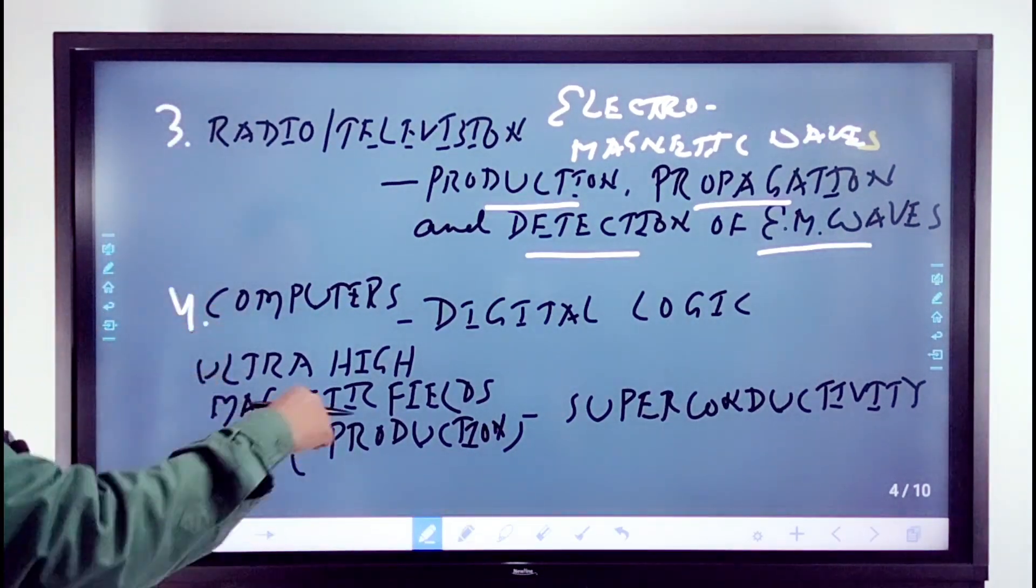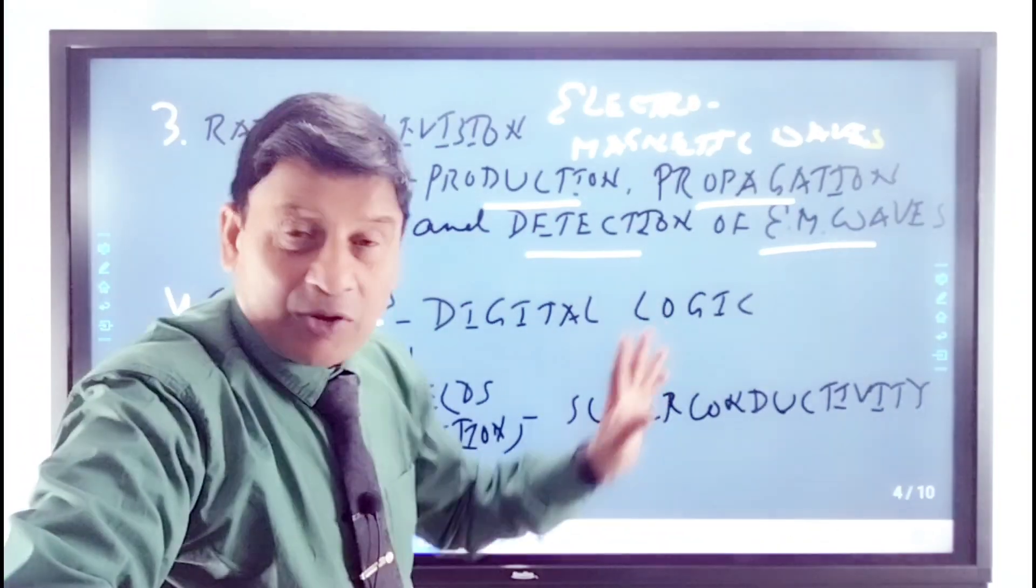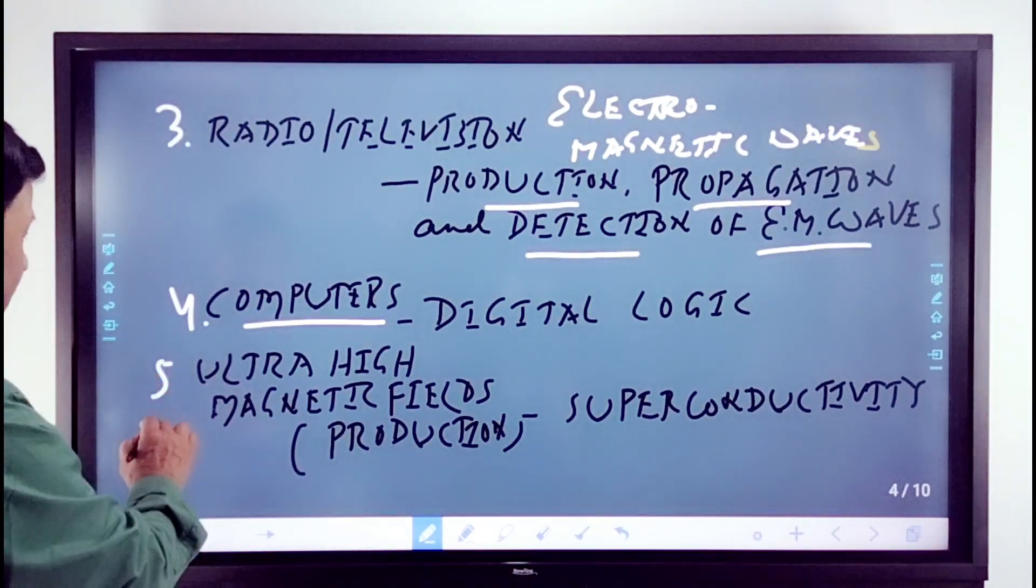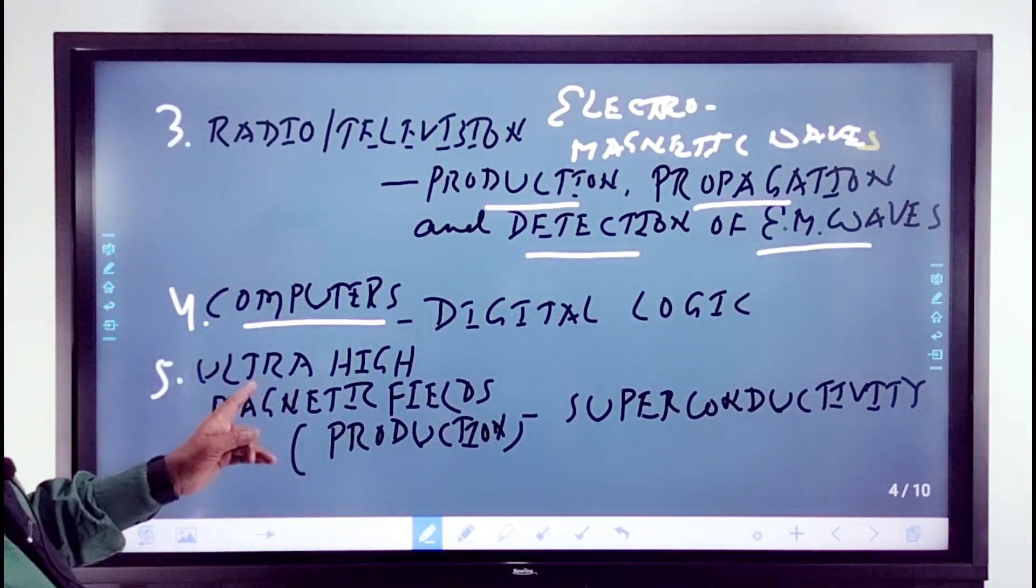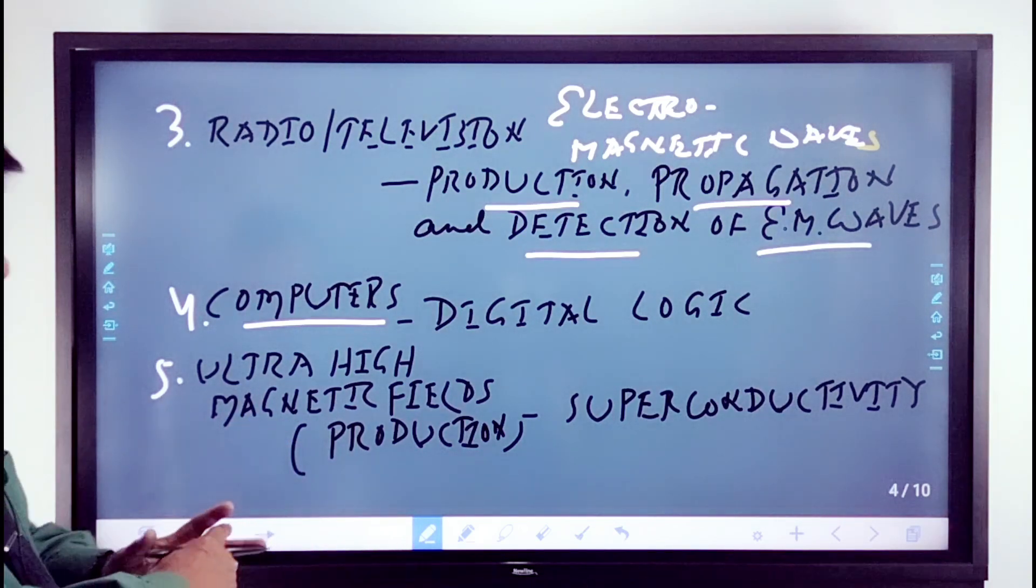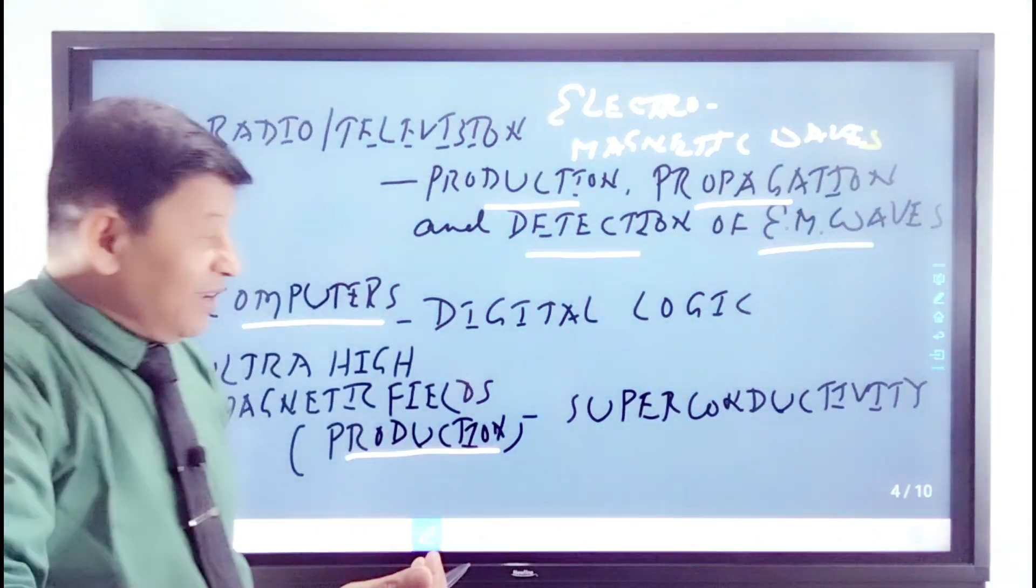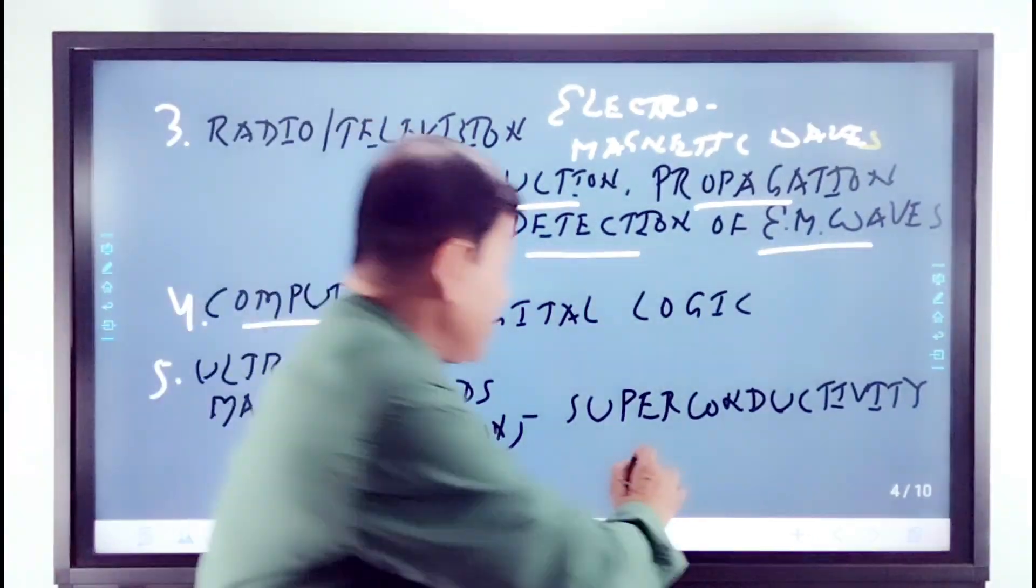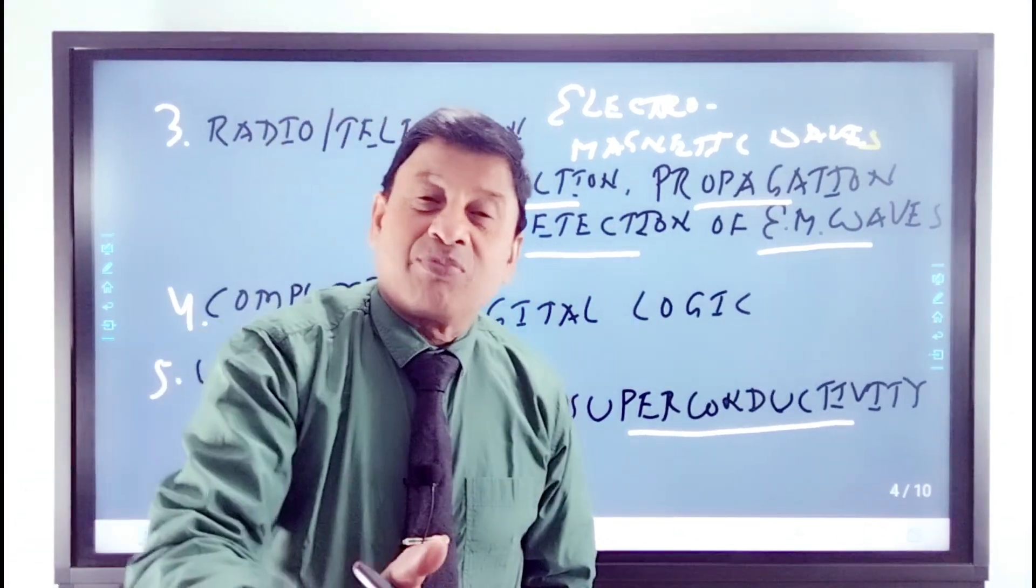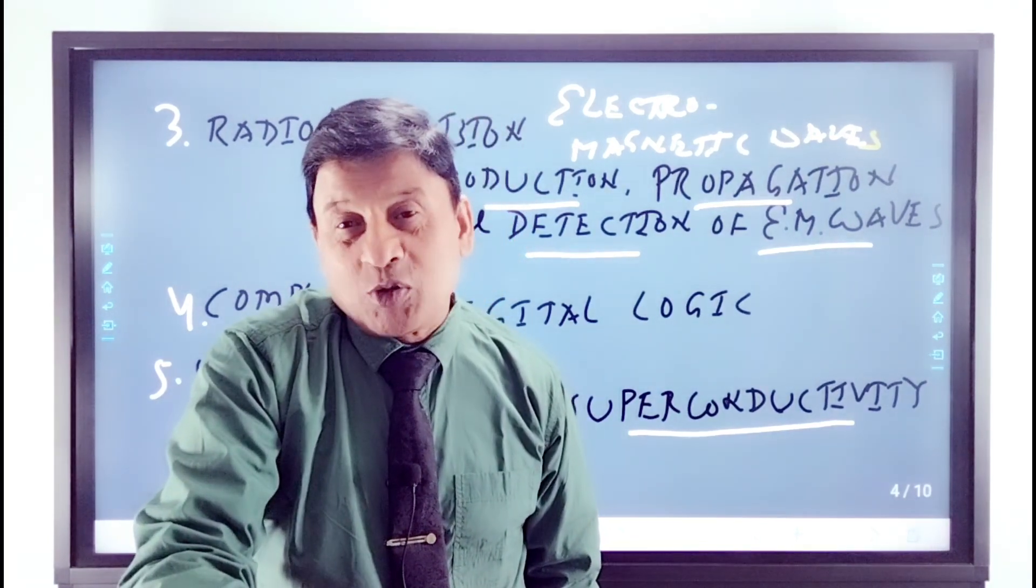Computers. Computers work on digital logic. Next, five: ultra-high magnetic fields. Production of ultra-high magnetic fields. This will depend on the superconductivity. You will learn about superconductivity.